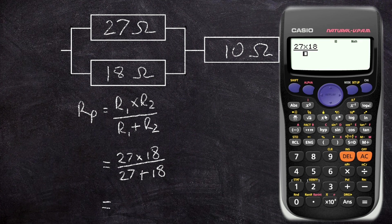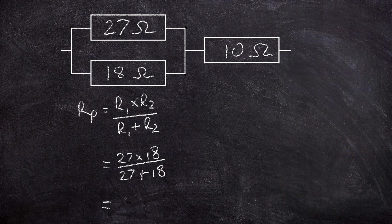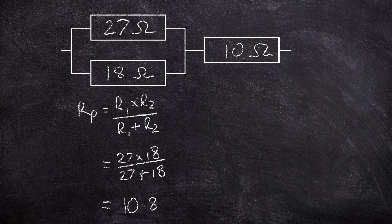So we've got 27 times 18 over 27 plus 18, so you can see there we've put it into the calculator exactly as we have drawn it on the screen here. So if we find the answer to that one, we find that that part of the circuit is going to have a value of 10.8 ohms, so there we've got 10.8 ohms. So that's worked out quite nicely there.